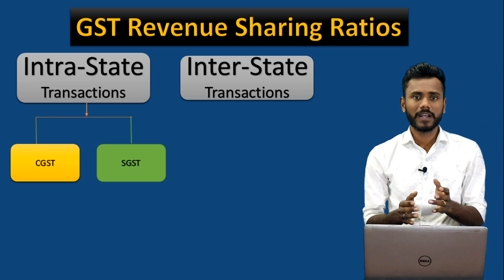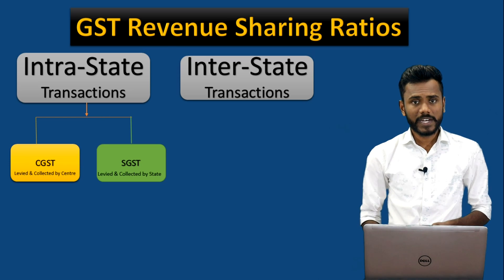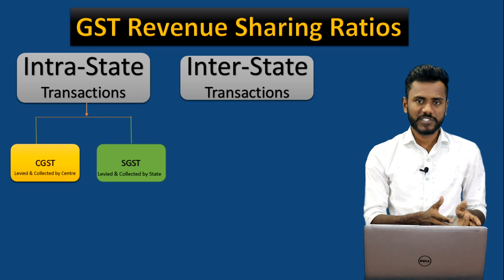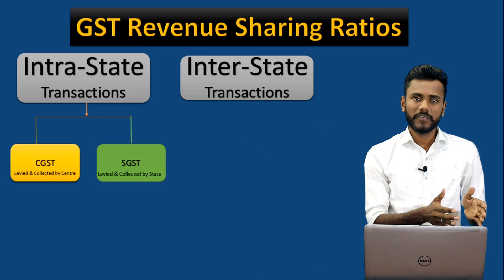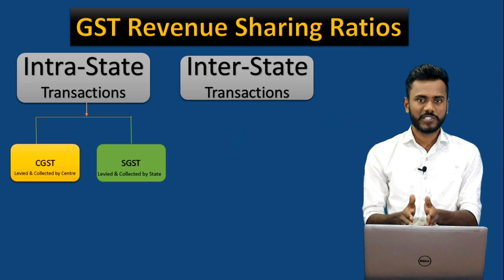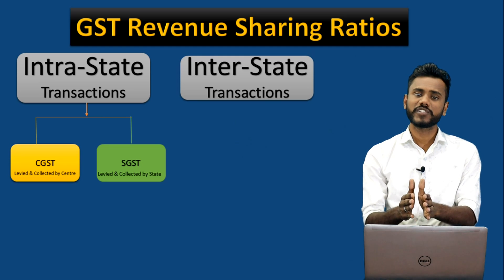On the supply, taxes will be levied and collected in the name of CGST — levied and collected by the central government — and SGST, levied and collected by the state.